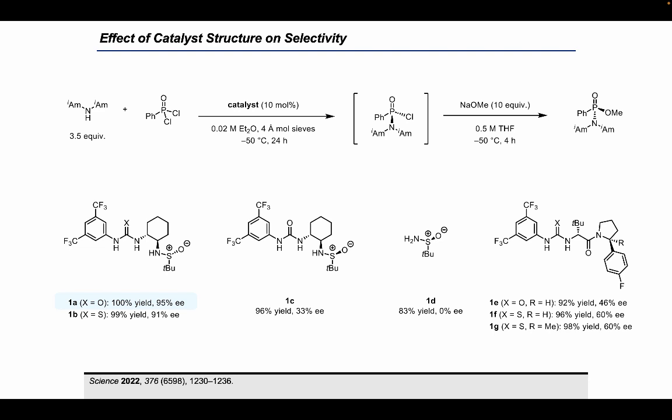Upon testing different catalysts, we discovered that the sulfenamide urea catalyst 1a afforded the product in quantitative yield and 95% ee under these conditions. Analysis of changes in enantioselectivity in response to changing catalyst structure revealed the importance of both the sulfenamide and the hydrogen bond donor. A thiourea analog 1b gave similar but slightly lower enantioselectivity, while catalyst 1c, epimeric at sulfur, gave significantly diminished selectivity, indicating the importance of sulfenamide stereochemistry.